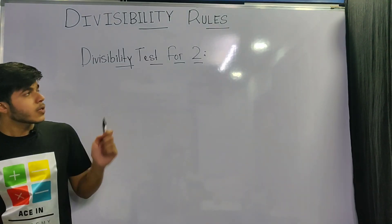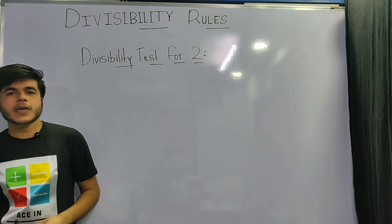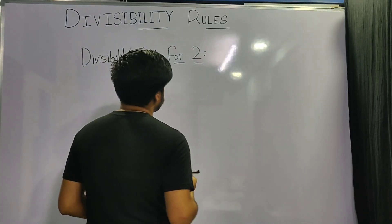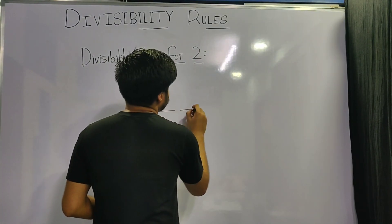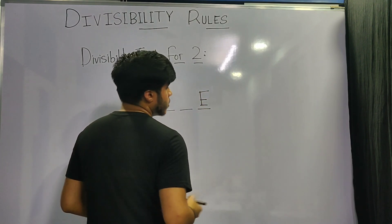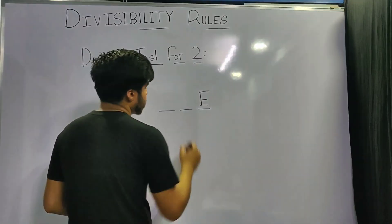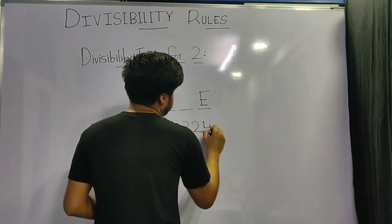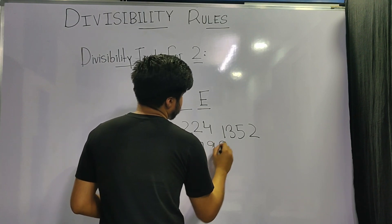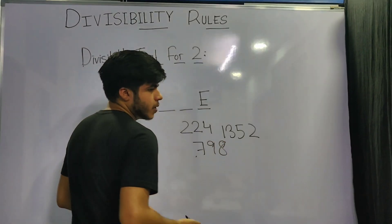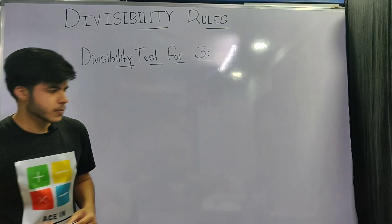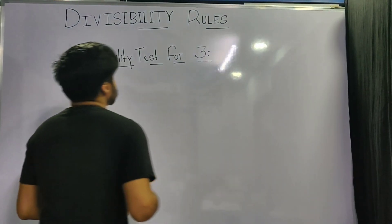Starting with the first number, we have the digit 2. The divisibility test for 2 is very simple: if the last digit of the number is an even number, then the number is divisible by 2. So 224, 1352, and 798 are all divisible by 2.